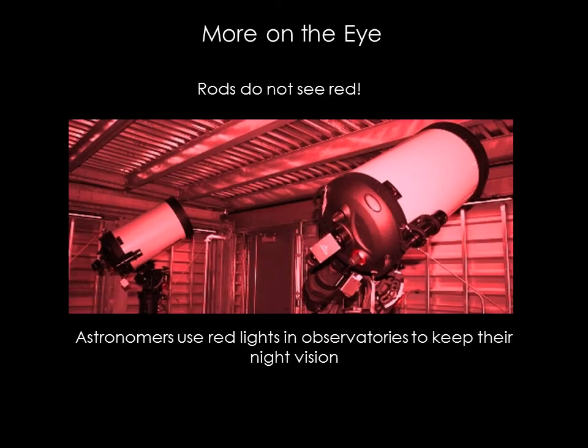The rods in our eyes do not see red. This is why astronomers use red lights in observatories. Since the rods do not respond to red, you can maintain full dark-adapted vision in red light. Once your eyes have adapted to the dark, if you look at anything with a white light, even for a moment, you have to wait for your eyes to become dark-adapted all over again. Red lights won't ruin your night vision like a white light can.